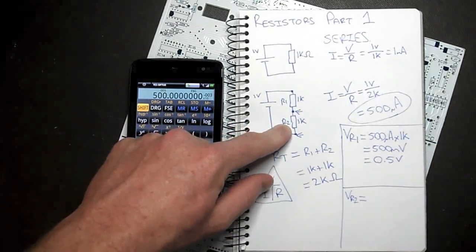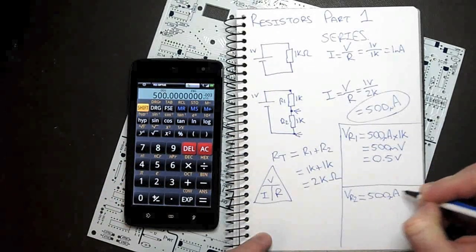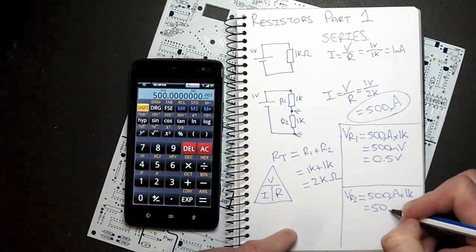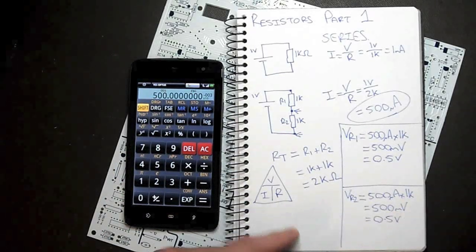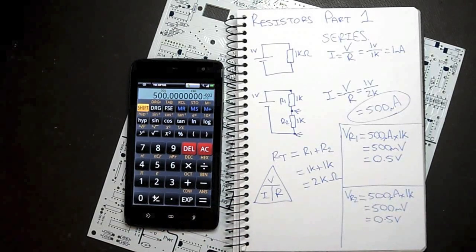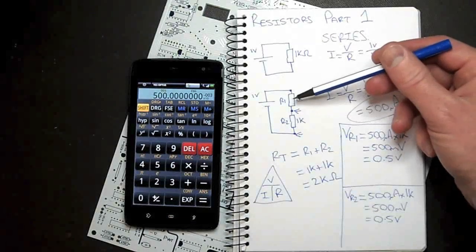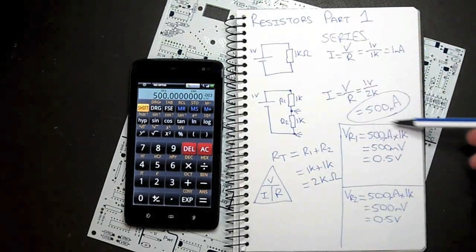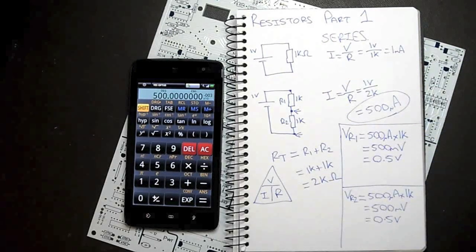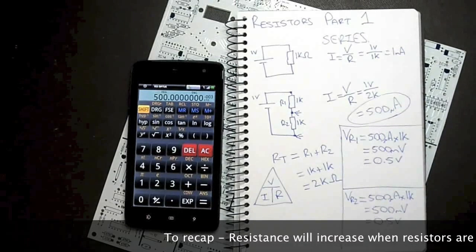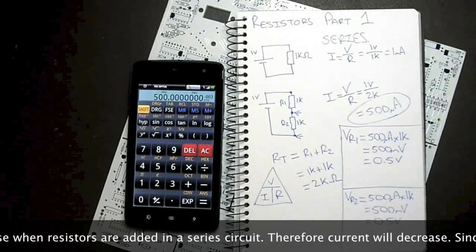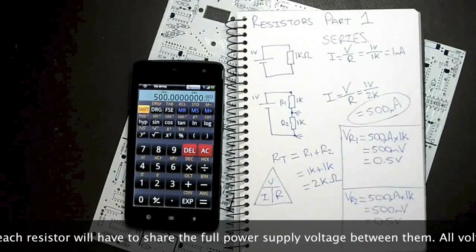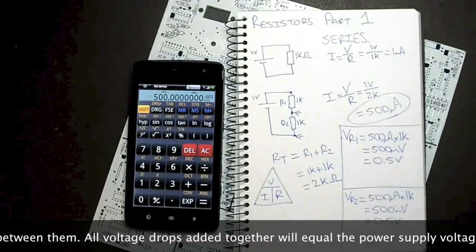So it stands to reason that R2 would be exactly the same — same amount of current flow because it's a series circuit, same resistance value, so same voltage drop. We've got one volt total, and two resistors that will share this voltage. Since they're the same value, it makes sense that they would each get half of the one volt. We've just proven that using Ohm's law. To recap: resistance will increase when resistors are added in a series circuit, therefore current will decrease. Each resistor will have to share the full power supply voltage, and all voltage drops added together will equal the power supply voltage.